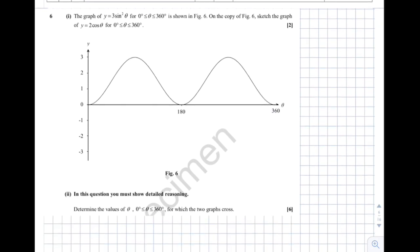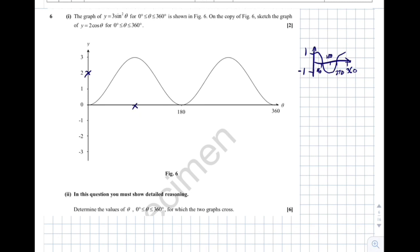Question 6: the graph of y equals 3 sine squared theta for 0 to 360 degrees is shown. Sketch y equals 2 cos theta on the same axes. We know cos theta goes between 1 and minus 1 with key points at 90, 180, 270, 360. So 2 cos theta is the same shape but stretched by 2: it starts at 2, reaches 0 at 90, goes to minus 2 at 180, back to 0 at 270, and returns to 2 at 360.